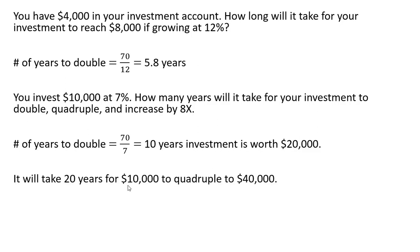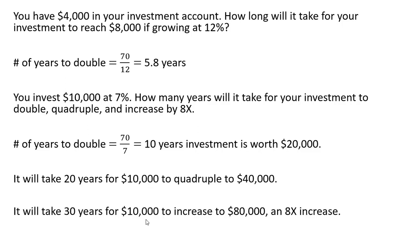So it'll take 20 years for $10,000 to quadruple to $40,000. And finally, for $40,000 to become $80,000, which is an 8 times increase over $10,000, it'll take another 10 years, assuming again the growth rate of 7 percent. So it'll take 30 years for $10,000 to increase to $80,000 — an 8 times increase.